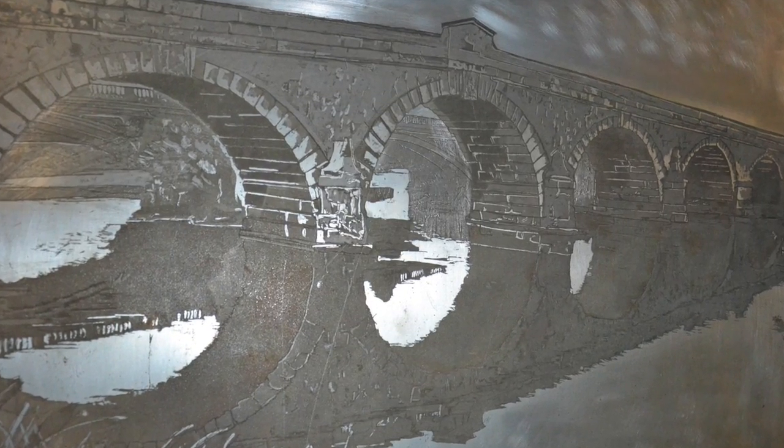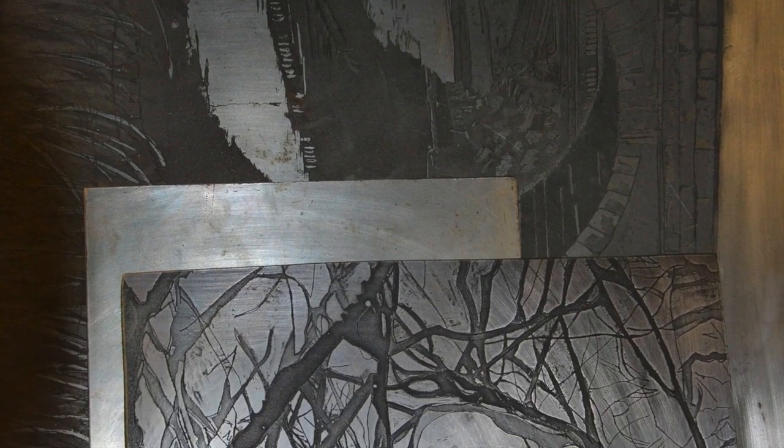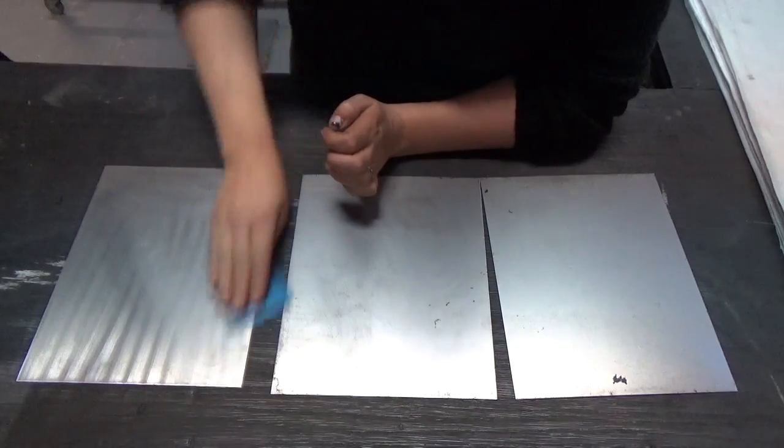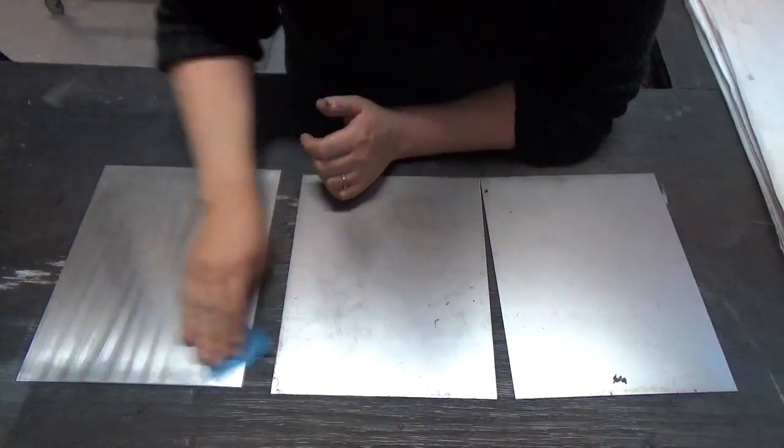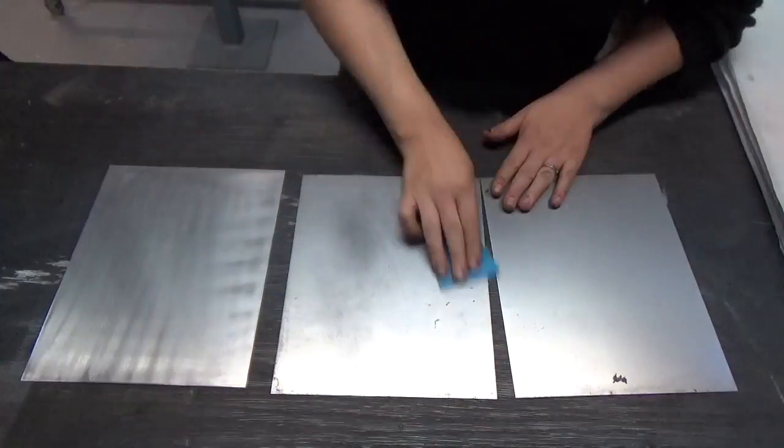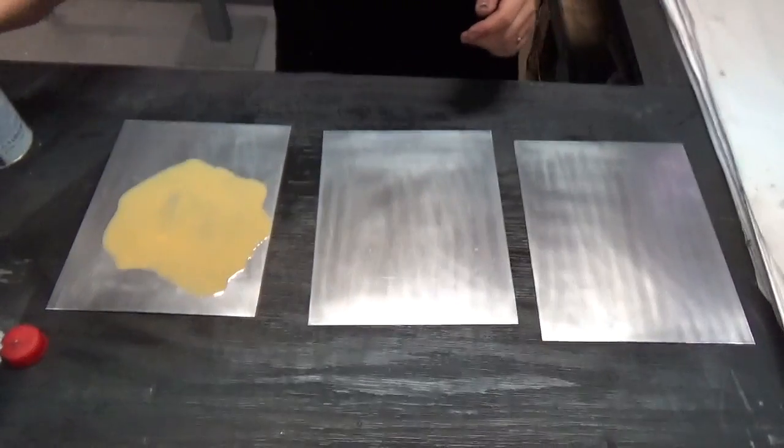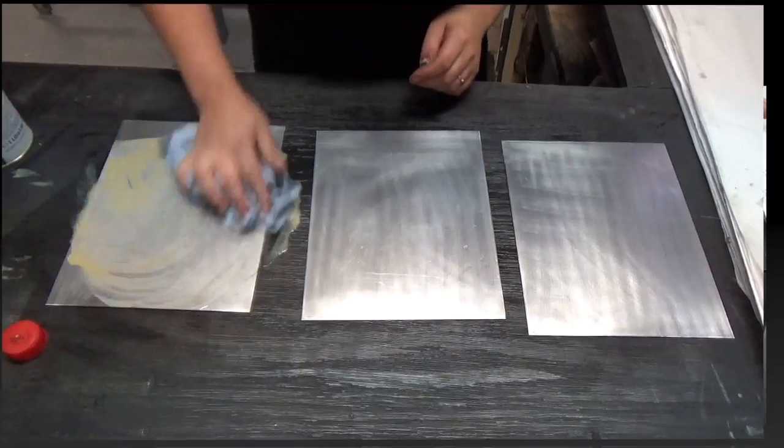Once you have decided which metal you would like to use, it is time to prepare your plates. The first thing to do is to make the surface as smooth as possible. You can do this by hand or by machine. I prefer by hand. Using low grade sandpaper, sand your plates so the surface is free of any rust or marks. Then use metal polish to finish your surface so it is nice and shiny and smooth.